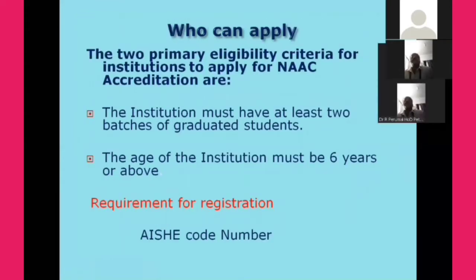Who can apply? There are two primary eligibility criteria for an institution to apply for NAAC. The first is the institution must possess at least two batches of passed-out students, and the age of the institution must be six years or above. In addition to these two conditions, there is one prerequisite for registering: the AISHE code number. MHRD developed a portal called All India Survey for Higher Education; all institutions must register in the AISHE portal and participate in the survey. That code number is mandatory for applying to NAAC.